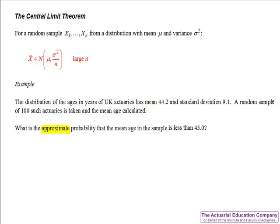We require a probability of the sample mean, so first we need to use the central limit theorem to get its approximate distribution. X-bar will be approximately normally distributed with the original mean of 44.2 and the original variance of 9.1 squared divided by the sample size of 100. We require the probability that X-bar is less than 43.